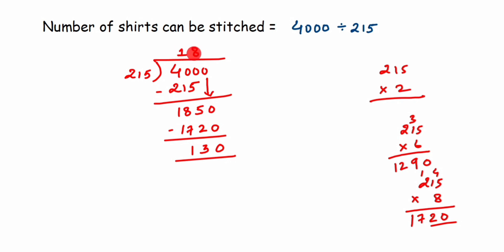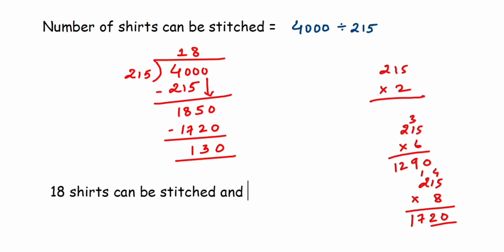So 18 shirts can be stitched from 4000 centimeters of cloth, and 130 centimeters of cloth will remain. Therefore, 18 shirts can be stitched and 130 centimeters of cloth is remaining. This was a simple question — the key is understanding that you need to perform division here. I hope it's clear; if you have other questions or doubts, drop a comment below. Thank you for watching.